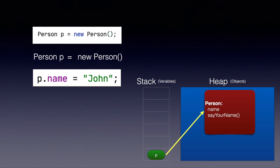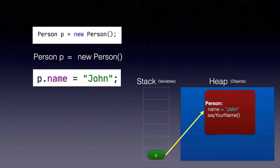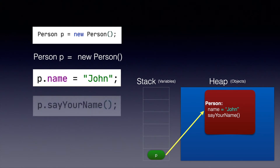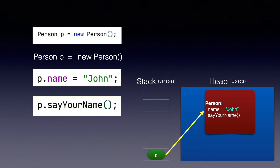Once the assignment is done, this is how your object will look. After this, we can call sayYourName using p, and then it's going to use the name and print it.